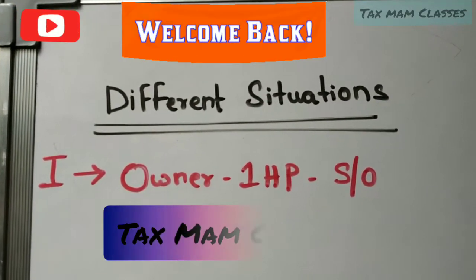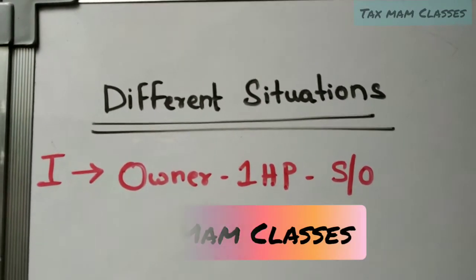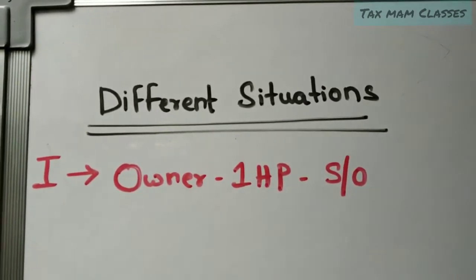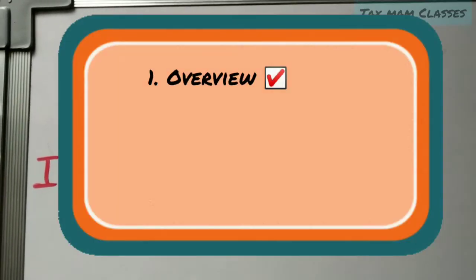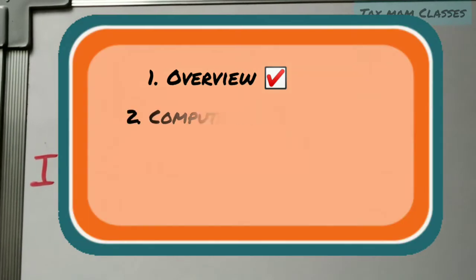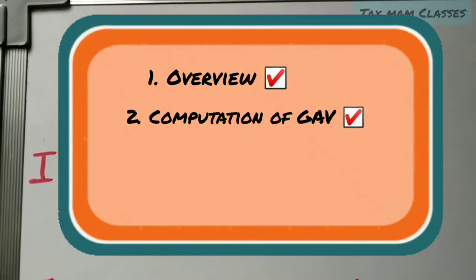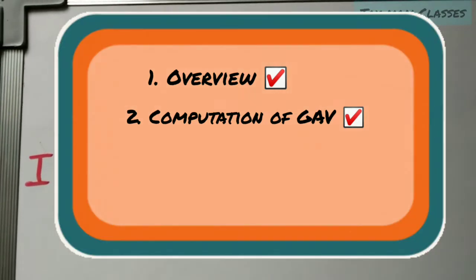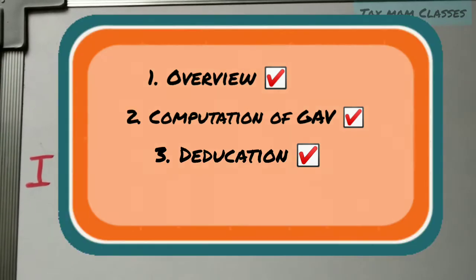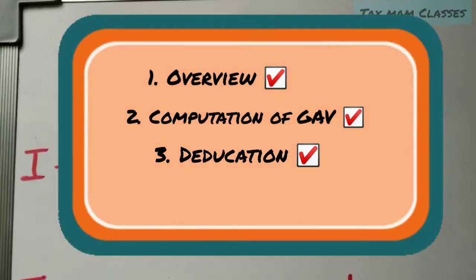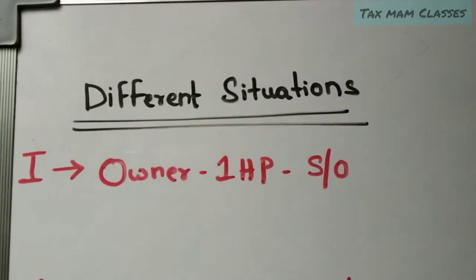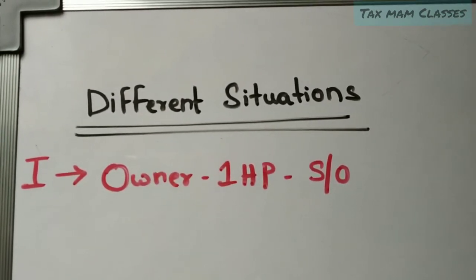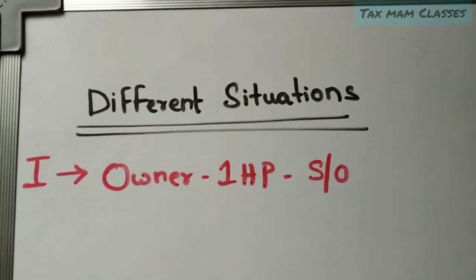Hello students, welcome to Tax Mom Classes. Today we are going to see how to solve the problem of computation of income from house property under different situations. So far we have learned the overview of the chapter, how to compute the gross annual value, and what deductions are available for income from house property. Today we will see how to solve problems under different situations, and I have already given the pro forma of how to compute income from house property.